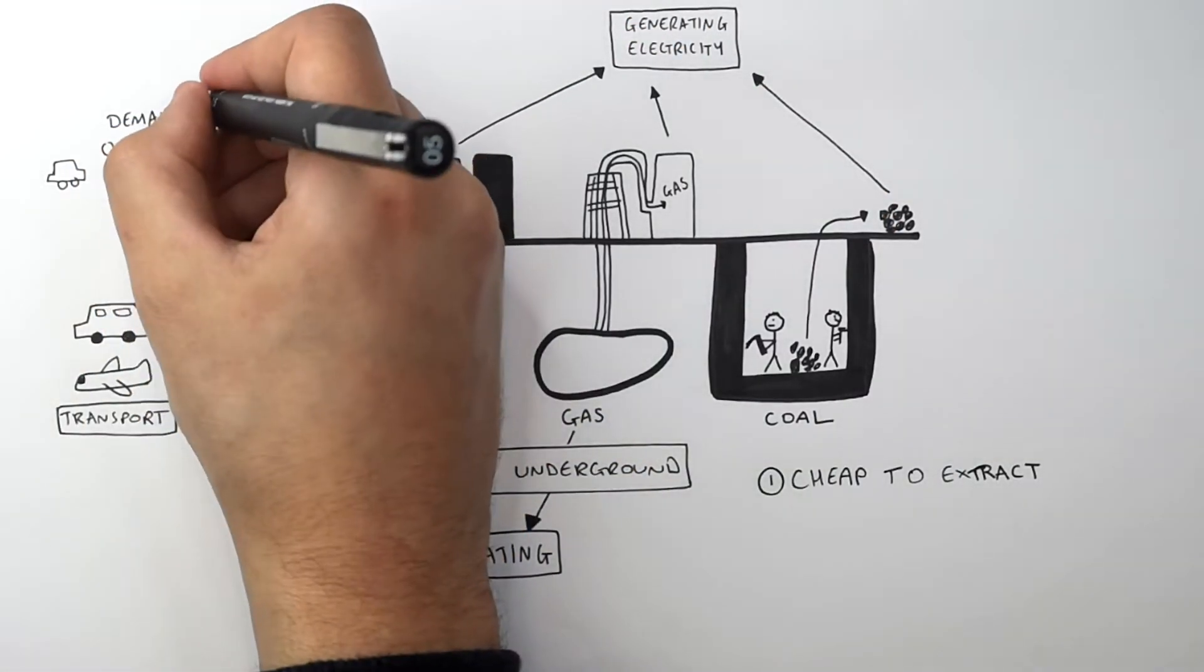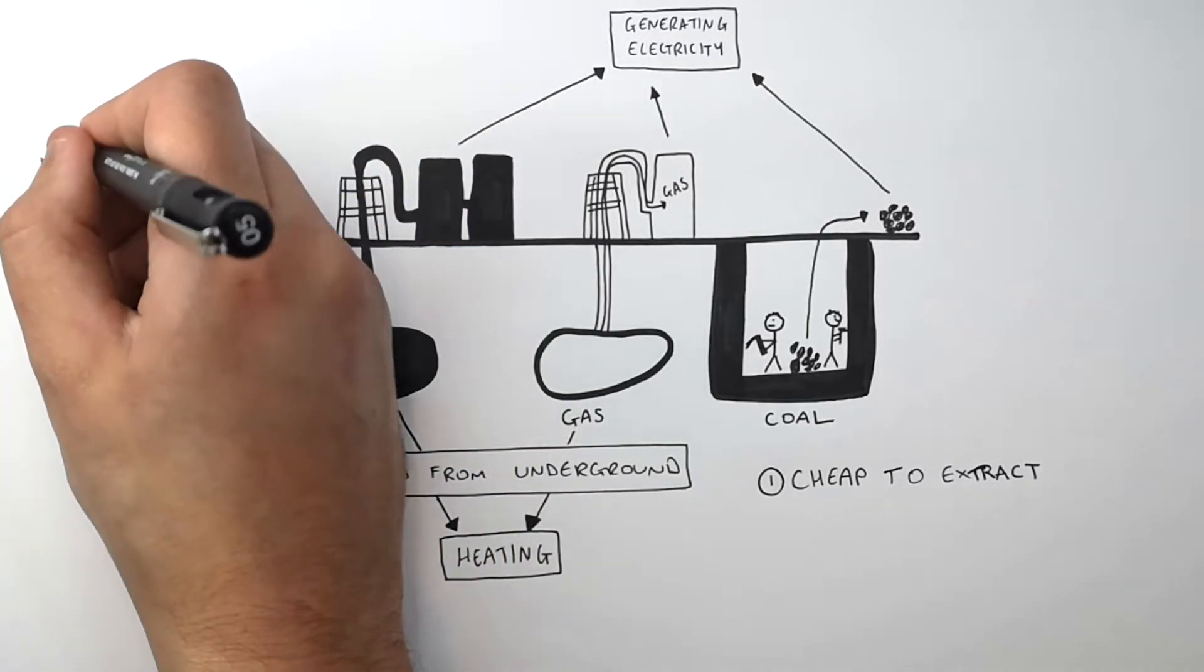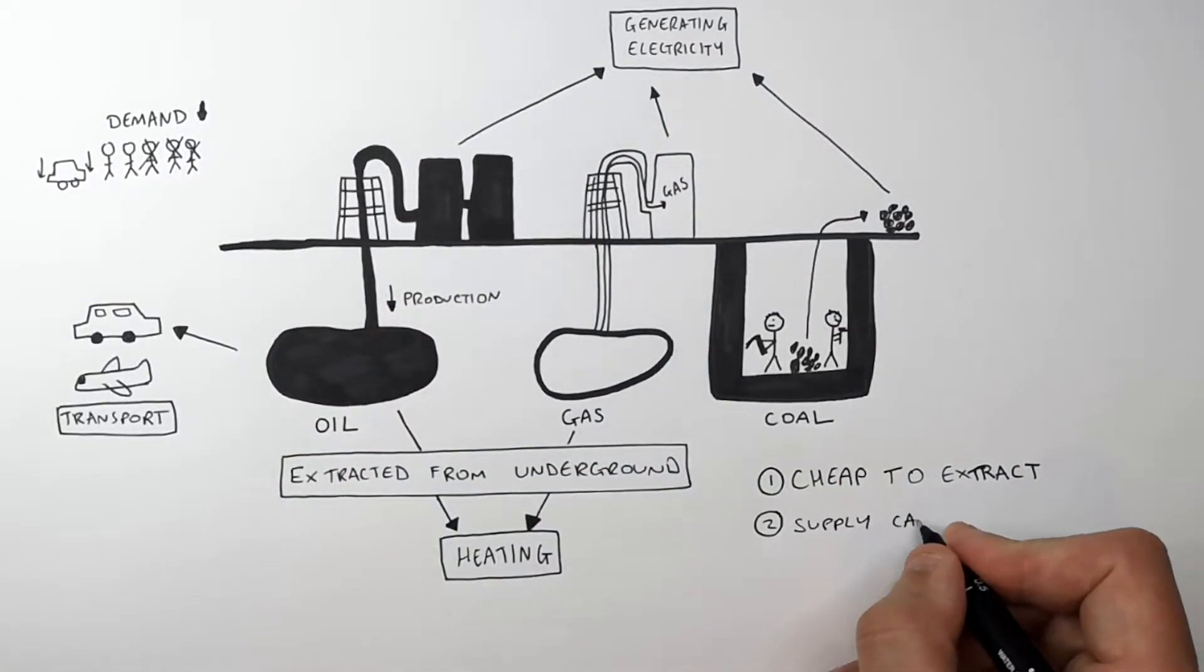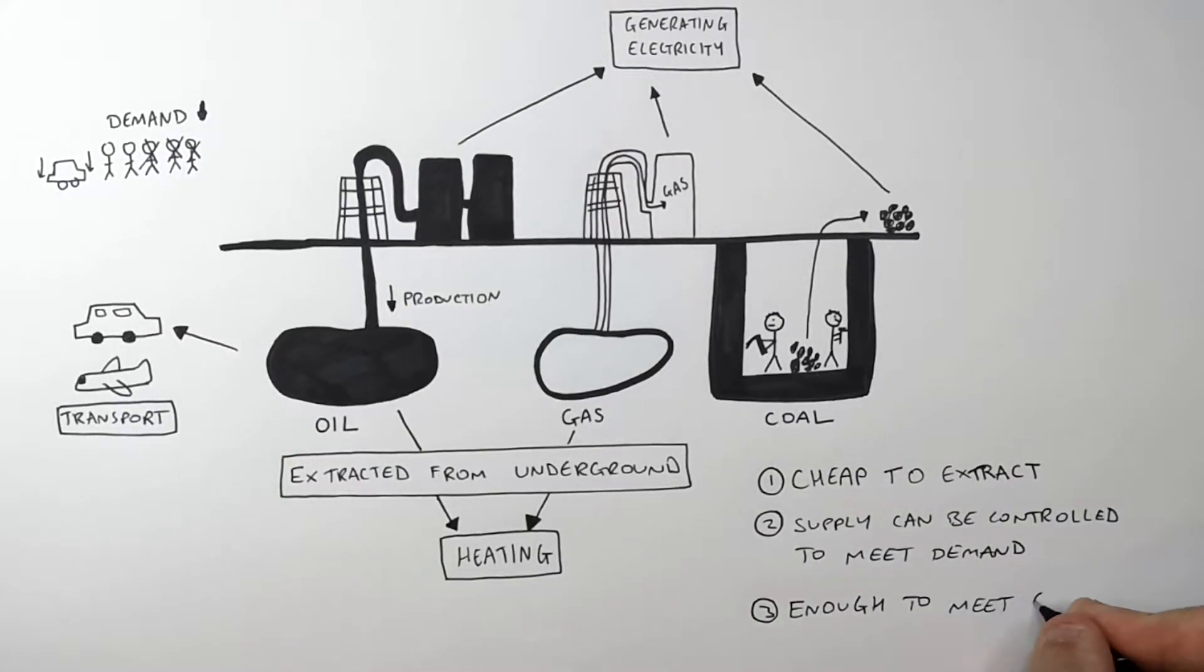But what if demand falls? It's very easy to limit the production of oil which will then decrease the supply to match the decreased demand. So supply can be controlled to meet the demand. And there is currently enough fossil fuels to meet current demands.